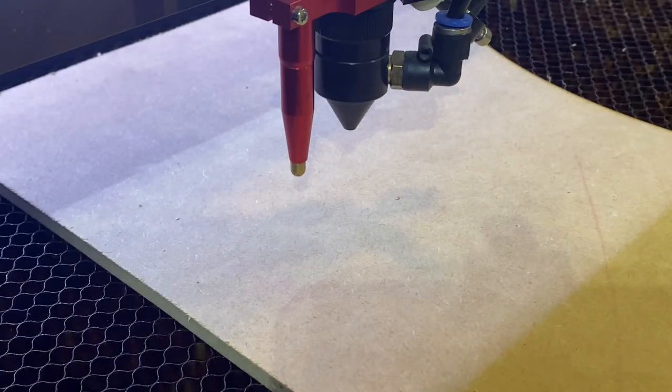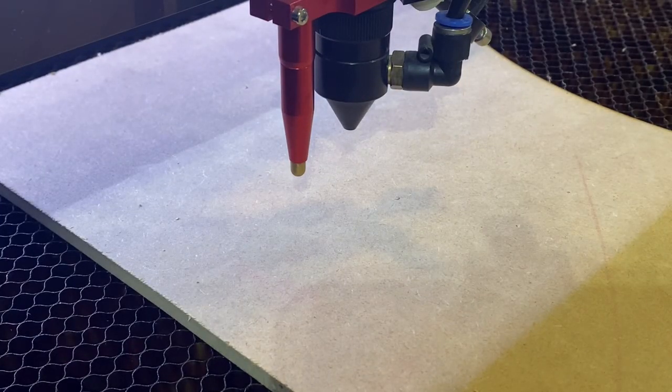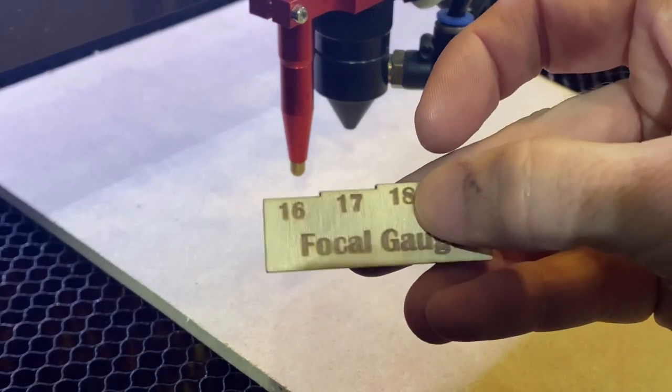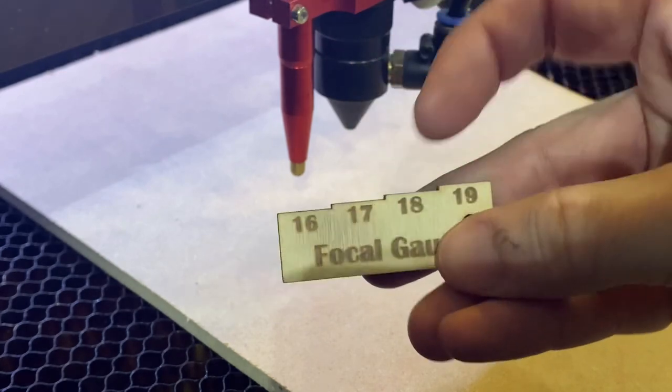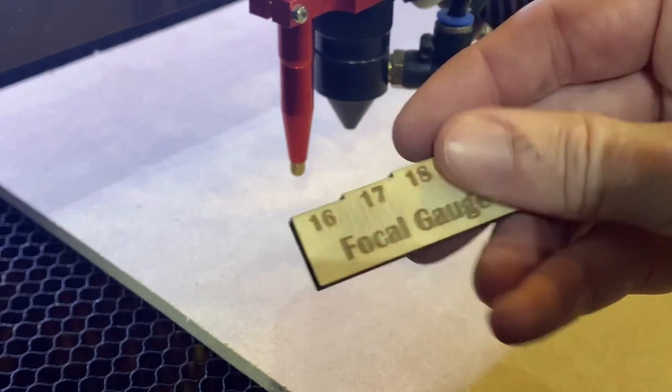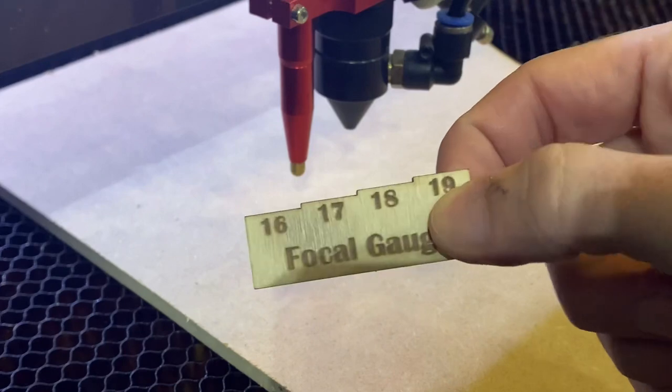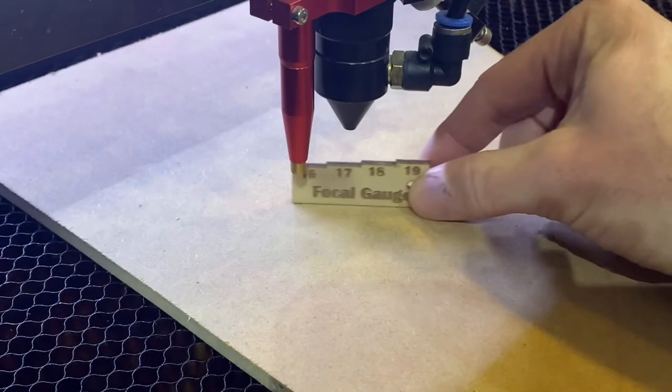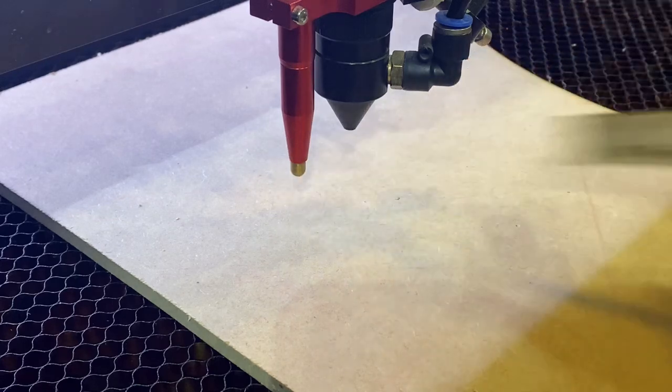Next thing we're going to do is I've already done a ramp test, and I know that my optimal focus is right around 18mm. So I've made these focal gauges. We actually have in our Facebook group, there is a file for these. So I'm going to go ahead and get it in focus, get this up to 18mm.